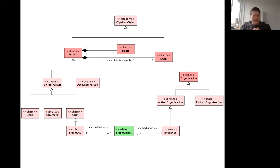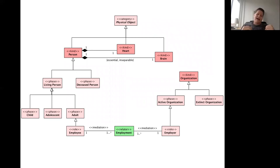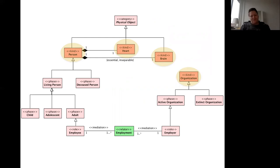OntoUML is an extension of UML including primitives that reflect ontological distinctions and constraints that follow from the underlying axiomatization. Unlike UML, ER, or ORM — which have a general notion of class or type — OntoUML makes a distinction between types of types. We distinguish between kinds of things: kinds are types that describe essential properties to their instances and classify their instances in a necessary, rigid, static way. For example, I'm necessarily a person.